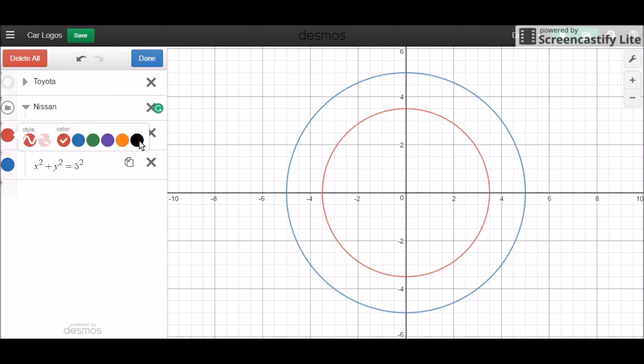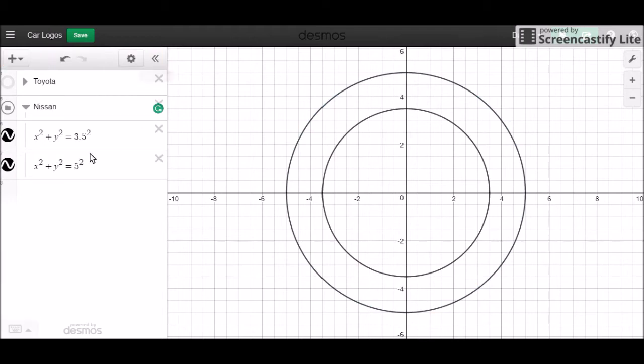If you want to change the radii of each circle, just change this number down here and make sure you still have the square. The next thing that I want to add is that rectangle that goes in the middle of it. I want to use an equation that I used in my last series.